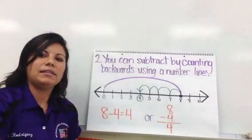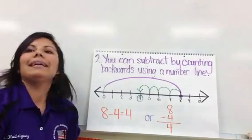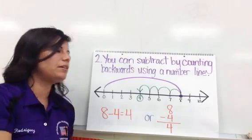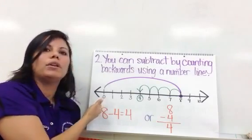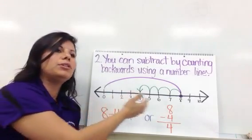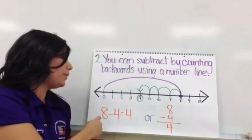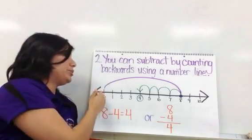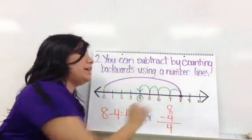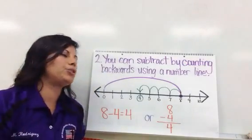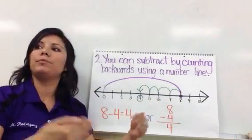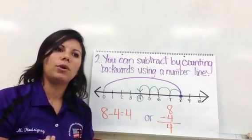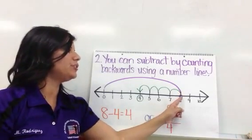The second method states that you can subtract by counting backwards using a number line. Here on this chart I have a number line from 0 to 10. The problem we used was 8 minus 4. We start at 0 and jump to 8, because that is our starting point. From there, I am going to subtract 4 by jumping backwards 4 times — starting at 8,